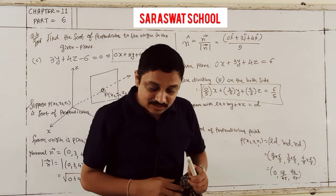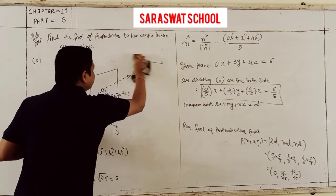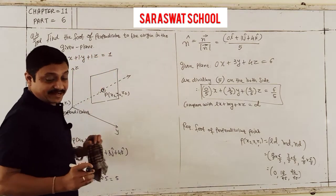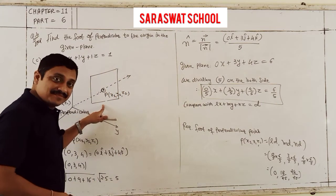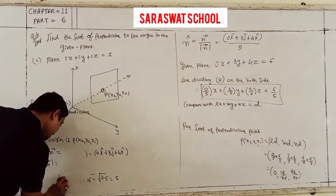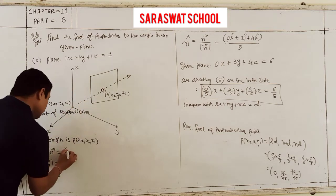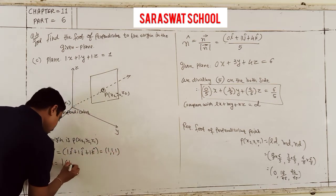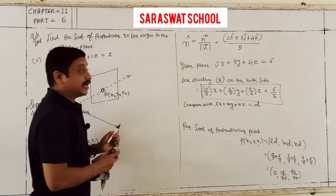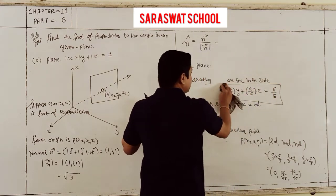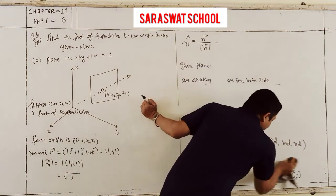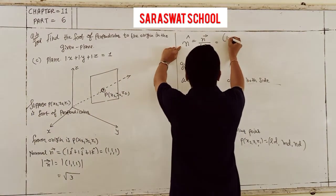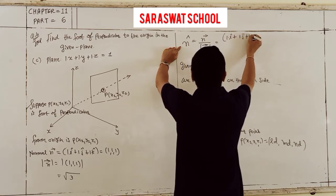Part C: equation is x plus y plus z equals 1. Written as 1x plus 1y plus 1z equals 1. The normal is (1, 1, 1) with magnitude root 3. So n-cap is (1i plus 1j plus 1k) by root 3, giving direction cosines 1/root3 each.